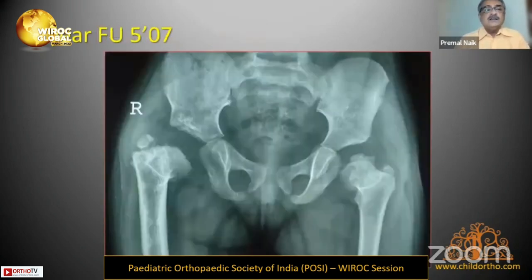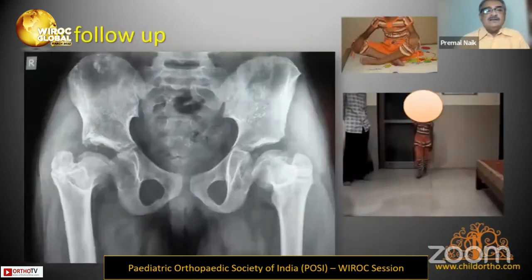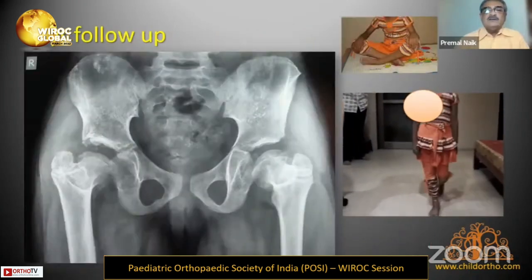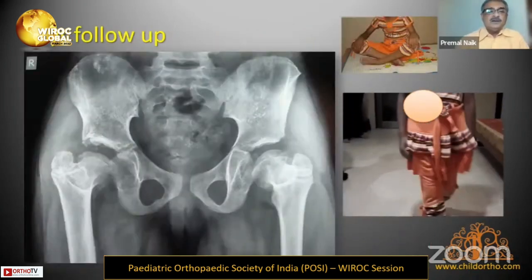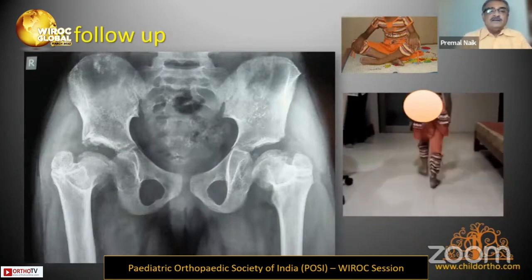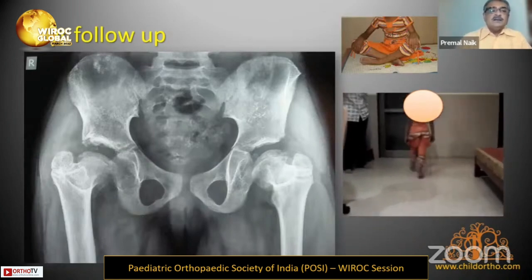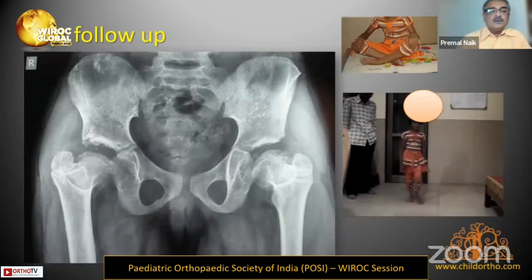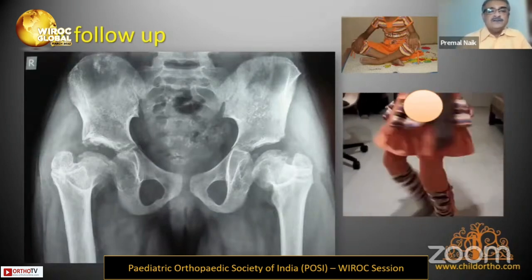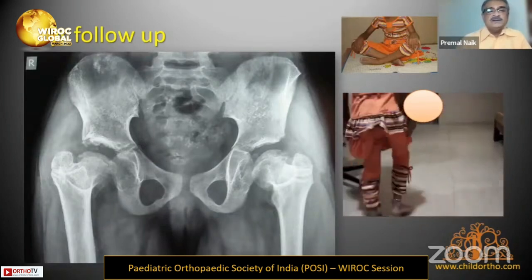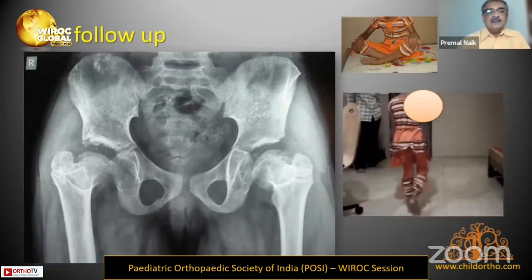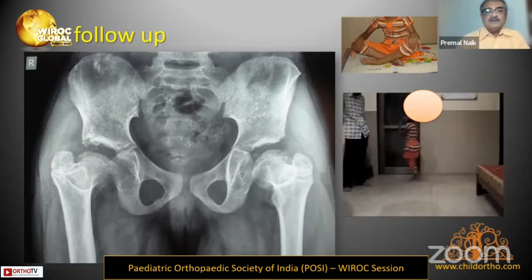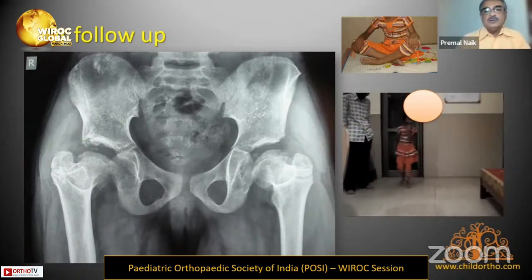At this point I added trochanteric epiphysiodesis, also well mentioned in Dr. Jhori's article. This is the four-year follow-up in 2007 and the six-year follow-up — the capital femoral epiphysis has appeared and the trochanter has been arrested, but the CFE is still at a lower level. This girl may need future procedures like relative neck lengthening or trochanteric advancement on both sides.